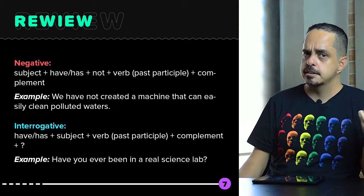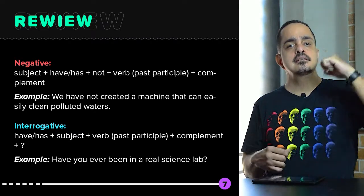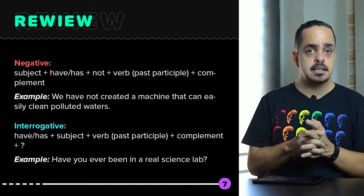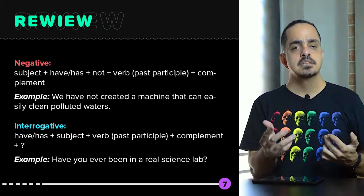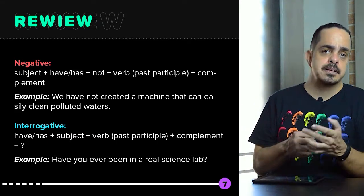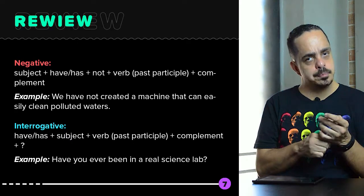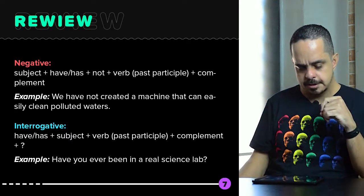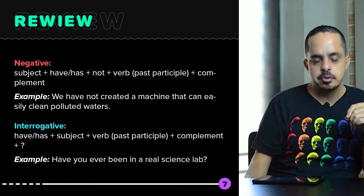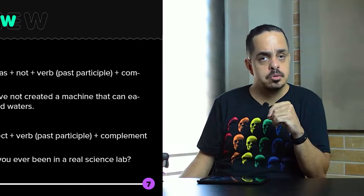For interrogative sentences, the auxiliary will go to the beginning: have or has, subject, main verb in past participle form, and a complement. For example: have you ever been in a real science lab?